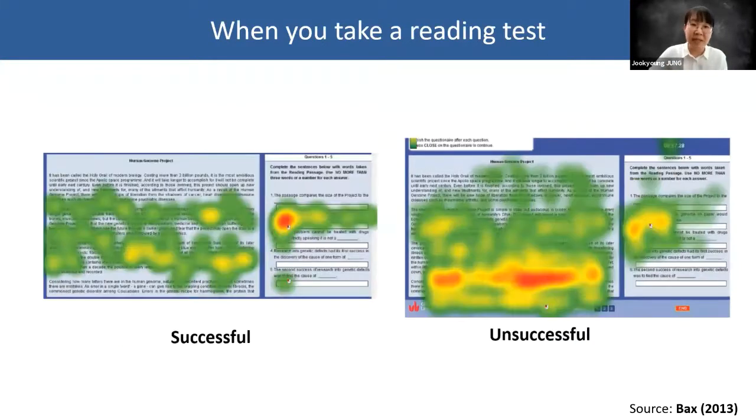Here's the heat map of their eye movements. As you can see here, the successful test taker could easily figure out the answer, while the unsuccessful test taker struggled a lot more, searching for the information to fill the blanks.